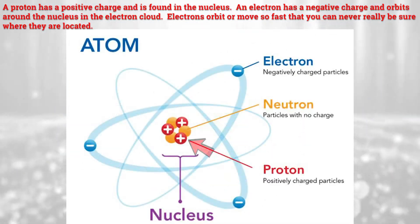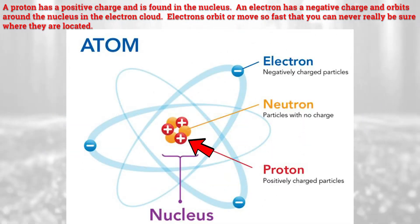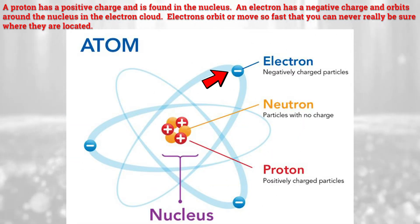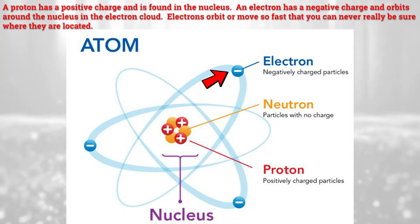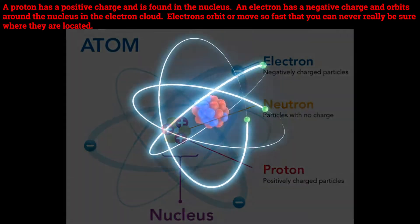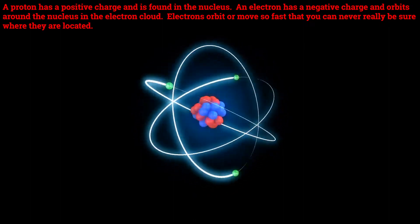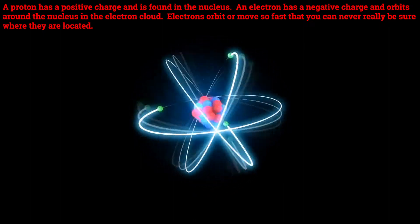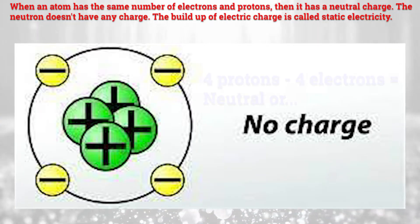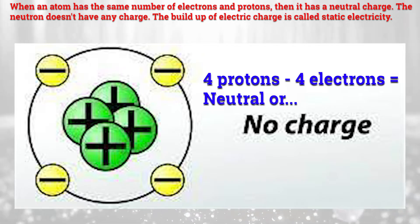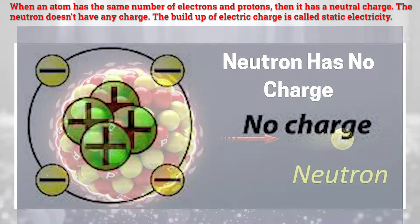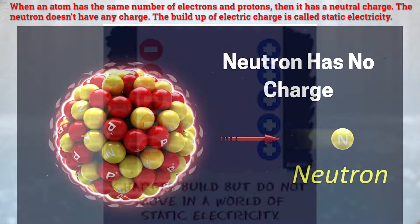A proton has a positive charge and is found in the nucleus. An electron has a negative charge and orbits around the nucleus in the electron cloud. Electrons orbit or move so fast you can never really be sure where they are located. When an atom has the same number of electrons and protons, then it has a neutral charge. The neutron doesn't have any charge.